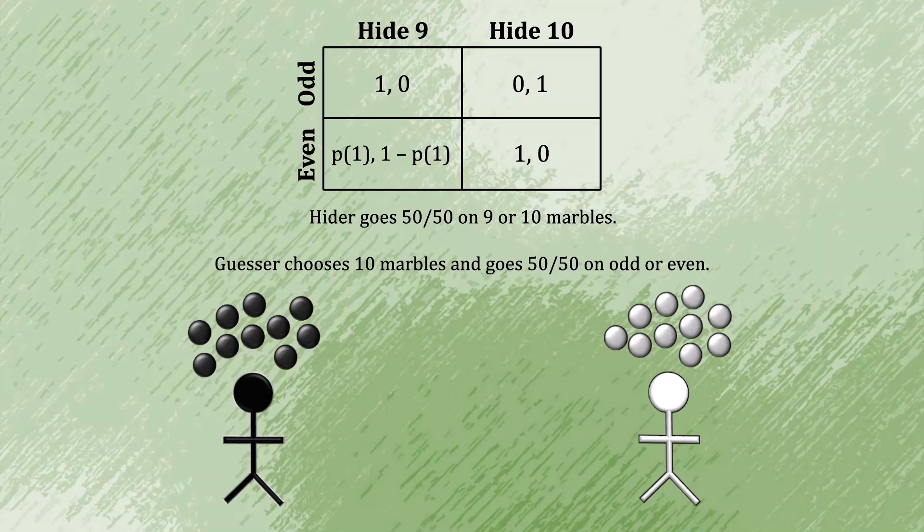It may seem complicated to calculate what that exact probability is. But it turns out that the second round is actually straightforward. As a consequence of this first round, the player on the right had to pay 9 marbles to the player on the left. And the right player, which was previously the guesser, now becomes the hider. But notice, they have exactly 1 marble left. Thus, it is impossible for them to hide an even number of marbles. They must hide 1, and 1 is an odd number.